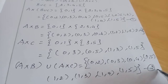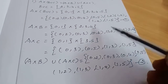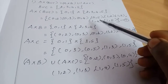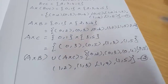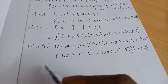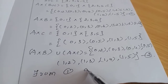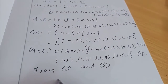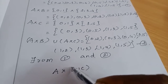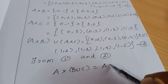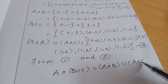This is equation number 2. Comparing equation 1 and equation 2, both give: (0,2), (0,3), (0,4), (0,5), (1,2), (1,3), (1,4), (1,5). They are equal. Therefore, from 1 and 2, A×(B∪C) = (A×B)∪(A×C) is verified.